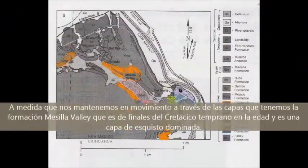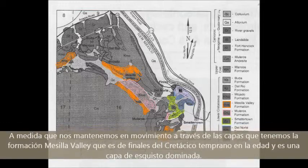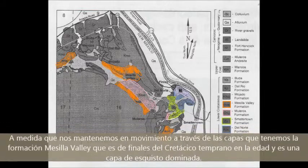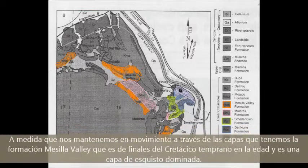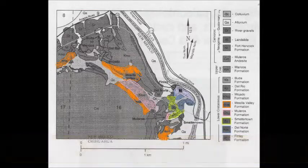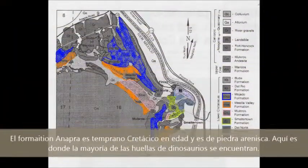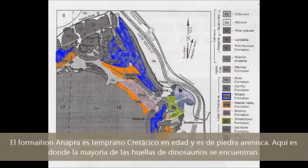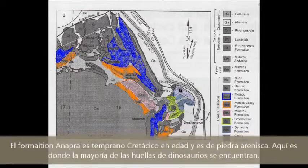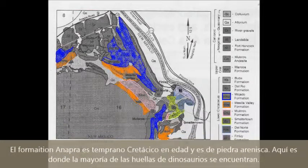As we keep moving through the layers, we have the Mesilla Valley Formation, which is late early Cretaceous in age and is a shale-dominated layer. The Anabla Sandstone Formation is early Cretaceous in age and is sandstone. This is where most of the dinosaur tracks are found.